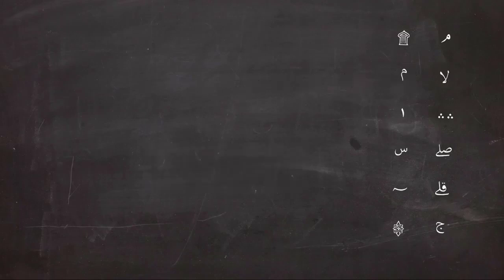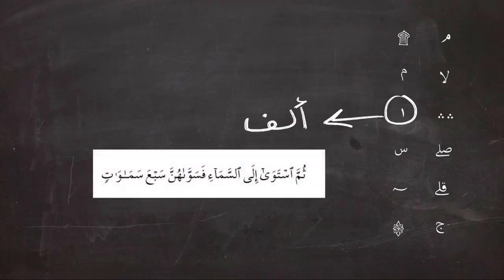Next, this small sign that looks like alif is actually an alif, and it is found so many times in the Quran. It means that this letter contains an alif of the long vowel, so you would read 'thumma stawa ila samaa.' These symbols all mean that there is an alif right there.